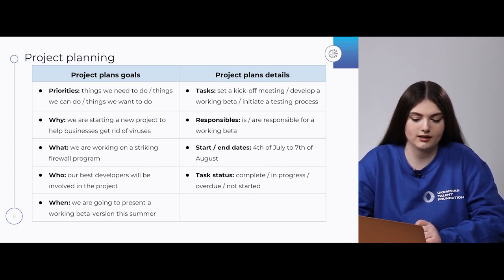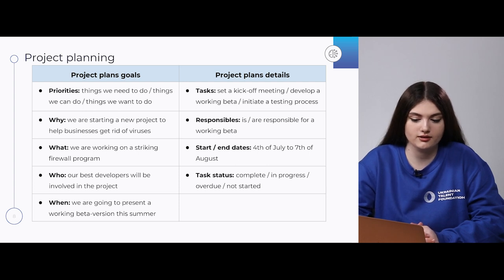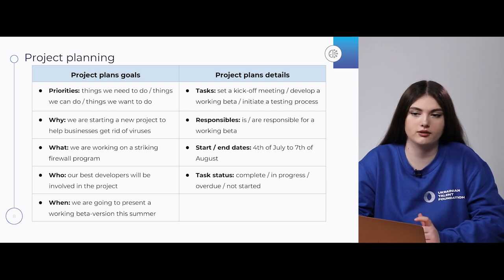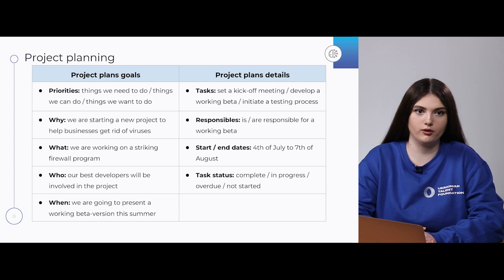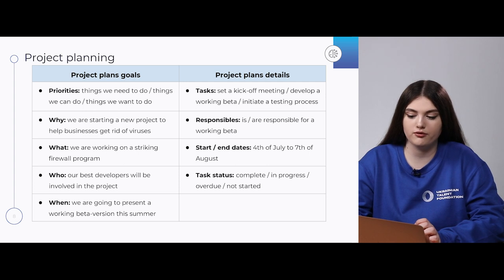Let's look at an example. Why: we are starting a new project to help businesses get rid of viruses — computer viruses. What: we are working on a striking firewall program. Who: our best developers will be involved in the project. And when: we are going to present a working beta version this summer. When we already have our skeleton and have answered all the questions, we should give more essential information to our plan.